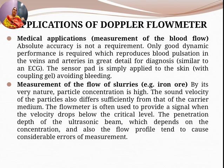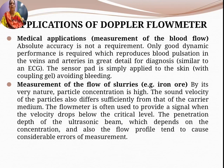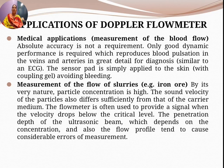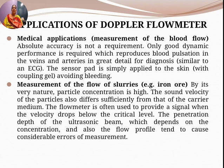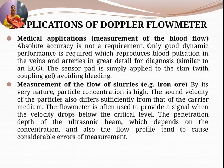Applications of blood flow meters. In medical applications, absolute accuracy is not a requirement — only good dynamic performance is needed, which reproduces blood pulsation in veins and arteries for diagnosis, similar to an ECG. The sensor pad is simply applied to the skin with coupling gel, avoiding bleeding. They are also used in measurement of flow of slurries such as iron ore, where particle concentration is high.